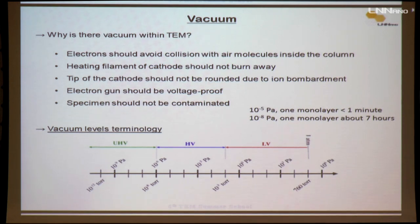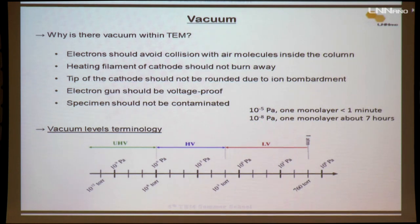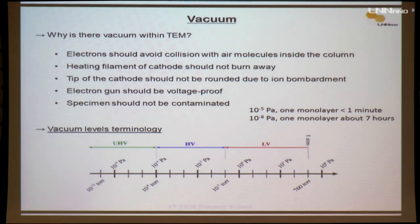For vacuum levels: up to 10⁻⁴ Pa can be considered low vacuum; up to 10⁻⁶ Pa is high vacuum; beyond 10⁻⁶ or 10⁻⁵ Pa is ultra-high vacuum. Importantly, even with good vacuum, contamination still forms. At 10⁻⁵ Pa vacuum level, forming one monolayer of contamination takes about one minute. At 10⁻⁸ Pa vacuum level, it takes about seven hours. So we always need to maintain a really very high vacuum in the machine.